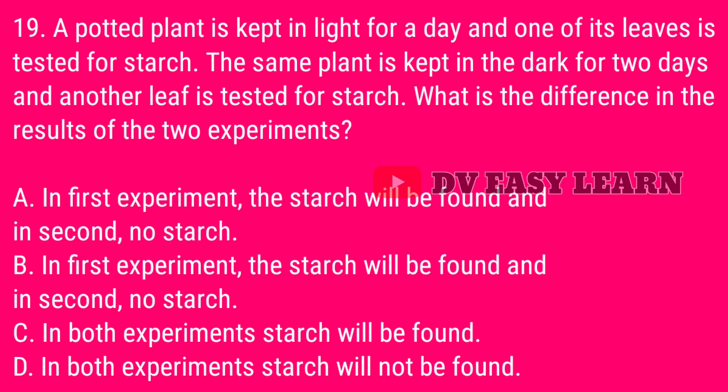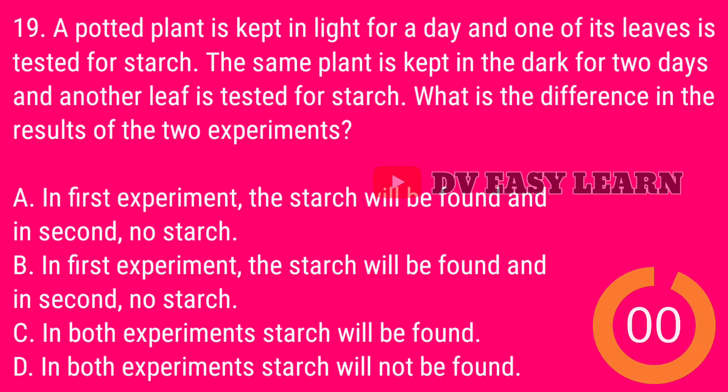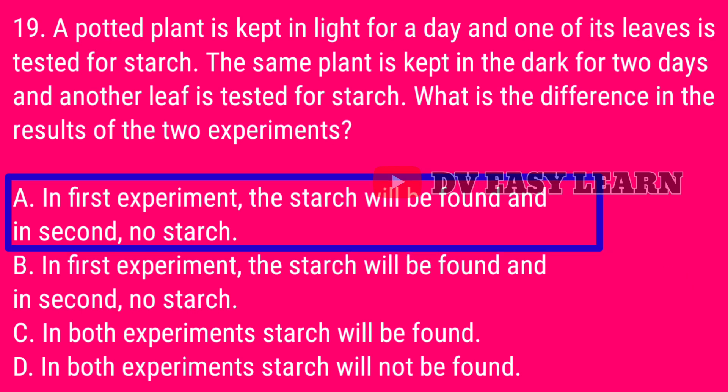Question 19. A potted plant is kept in light for a day and one of its leaves is tested for starch. The same plant is kept in dark for two days and another leaf is tested for starch. What is the difference in the results of the two experiments? In the first experiment, starch will be found, and in the second, no starch.